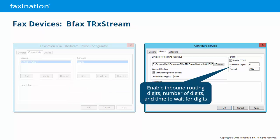Under DTMF is where you enable inbound routing digits. The term DTMF, or dual-toned multi-frequency, is technically for analog cards, but it's used here to mean any form of routing digits that are passed to FaxNation by the telephony system or line provider. You can set the expected number of digits, which should match the configuration of the telephony system, and the time in milliseconds to wait for those digits.